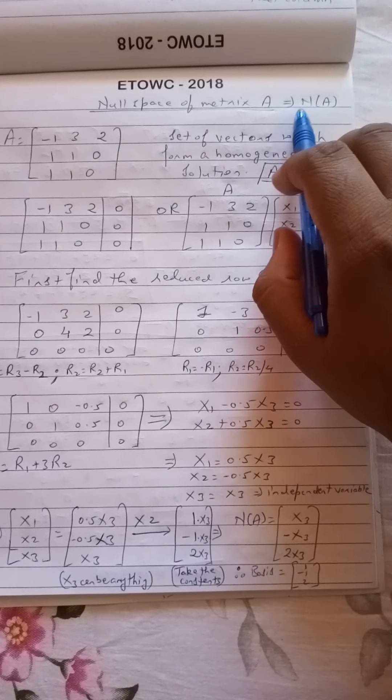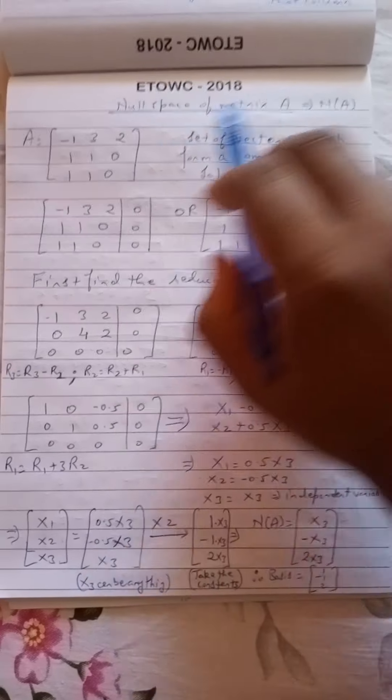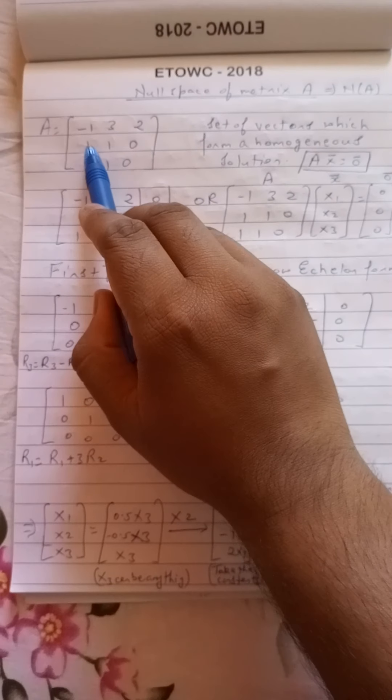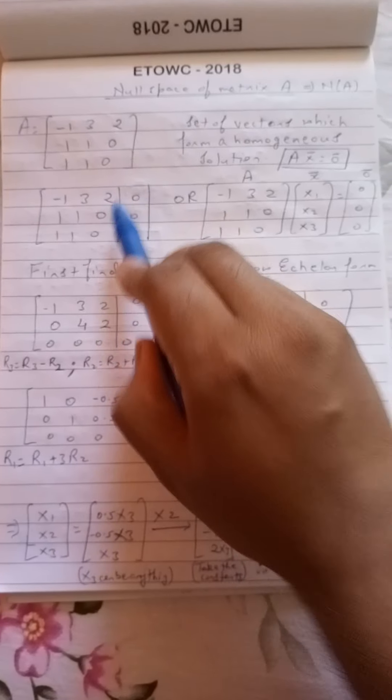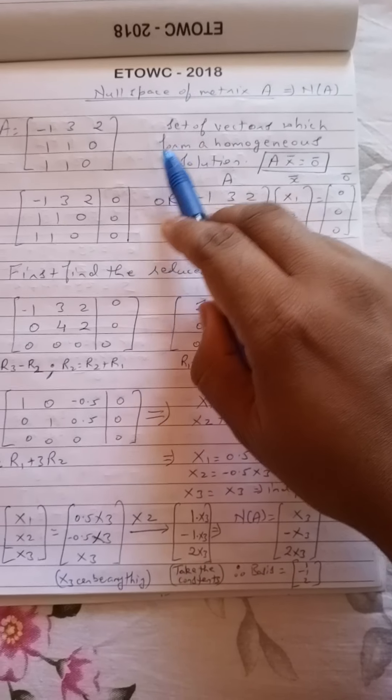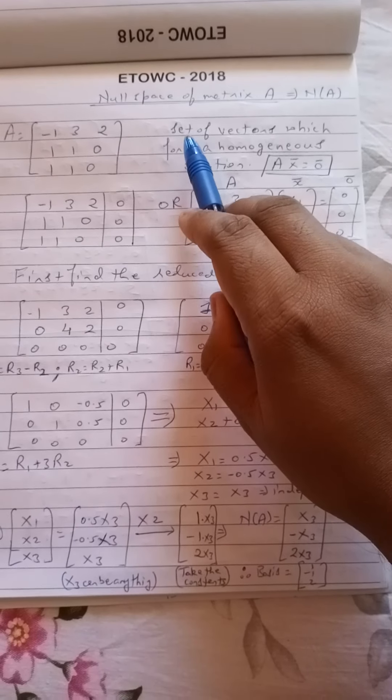In this video I'll explain how to find the null space of a matrix A. The null space of a matrix A is denoted as N of A. So this is the matrix which is given to us: A equal to minus 1, 3, 2, 1, 1, 0, 1, 1, 0.